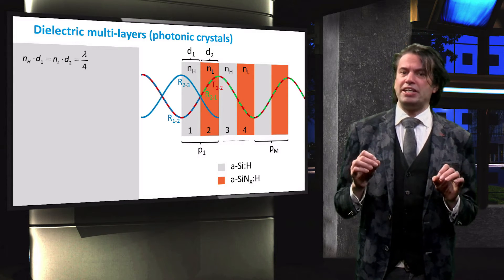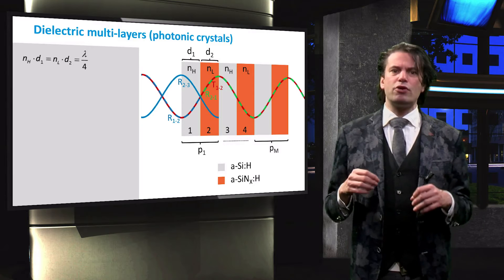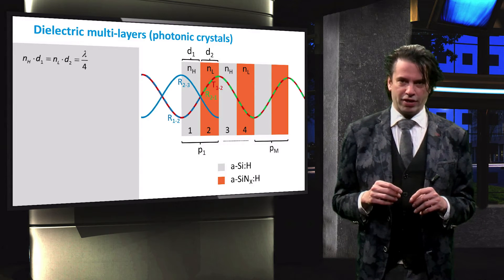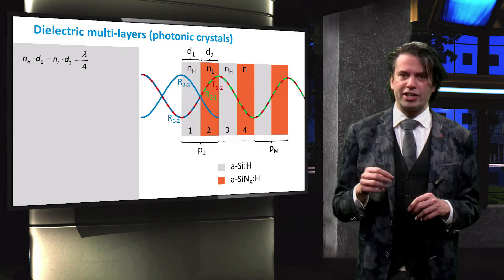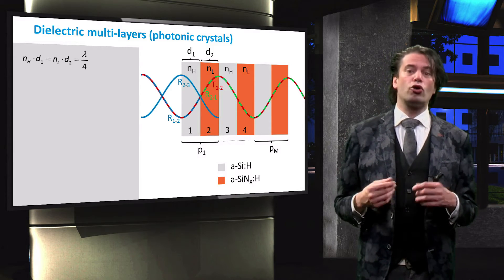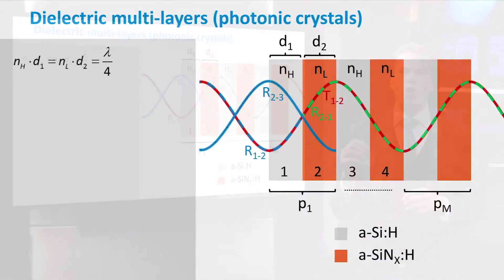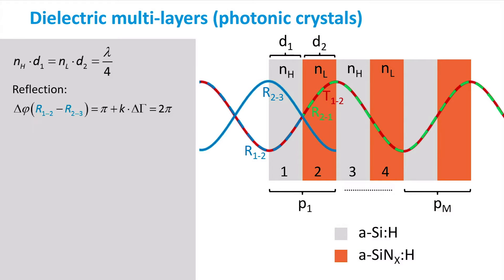The optical thickness — meaning N times D of each of the layers — equals a quarter of the intended wavelength. Such an optical thickness, under normal incidence, causes a phase shift of 1π. Considering the 1-2 interface, the two waves exhibit a phase shift due to the reflection at the 2-3 interface and due to the optical path length difference between the two waves. The total phase shift difference between the waves is therefore equal to 2π.